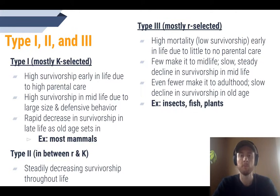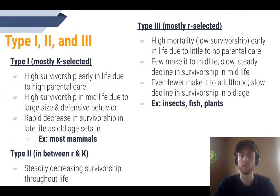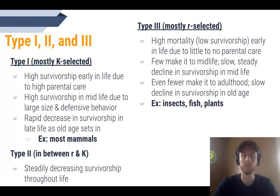Type two are somewhere in the middle between type one and type three. Just like there's a spectrum of parental care, there's also a spectrum of survivorship. Type two species are organisms like birds or rodents — they typically have a little parental care early in life, but they're smaller organisms less capable of protecting their young from predators, or they have young that are more sensitive to disease or temperature. Think about a baby chick or a small rodent without fur. Type two species experience a pretty constant and steady decline throughout life, so just because a bird survives its fledgling stage doesn't guarantee it will reach full adulthood.